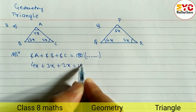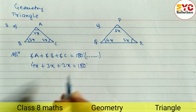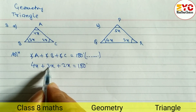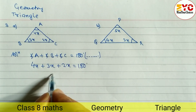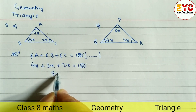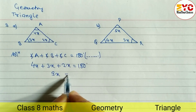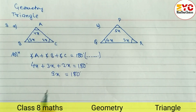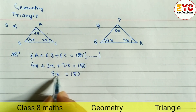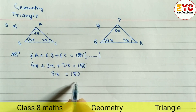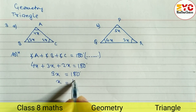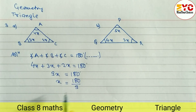So 4x plus 3x plus 2x is equal to 180 degrees. 4 plus 3 is 7, 7 plus 2 is 9, so we have 9x which is equal to 180 degrees. This is multiplication so we have to divide. X is equal to 180 divided by 9, therefore X is equal to 20 degrees.